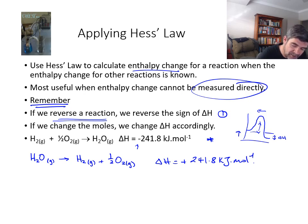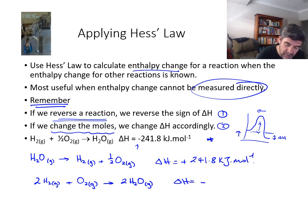Likewise, if we change the number of moles, we also have to change delta H. So if I leave the equation the same this time and I write it as 2 H2 gas plus O2 gas producing 2 H2O gas, then this time the delta H value that I have must be double. So the sign will be the same, but now 241.8 is going to go to 483.6 kilojoules per mole.